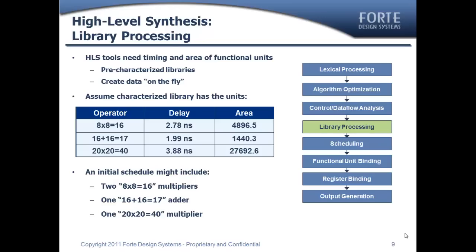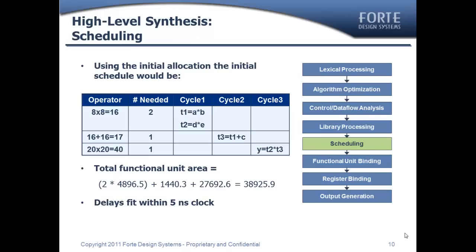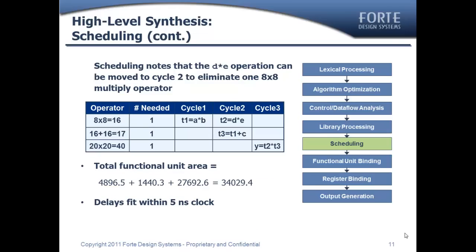An initial schedule might include two 8x8 multipliers, a 16x16-bit adder, and a 20x20 multiplier. Looking at the cycle-by-cycle schedule, we would need three cycles: two multipliers in the first cycle, an addition in the second cycle, and the final multiply in the third cycle — giving a total area of about 39k square microns. The scheduler would then note it doesn't need the second 8x8 multiplier in the same cycle as the first — it can run in parallel with the adder instead. Moving that second multiplication to cycle two means only one 8x8 multiplication operation is needed, reducing area to 34k, with no timing issues since the operations don't share common inputs.